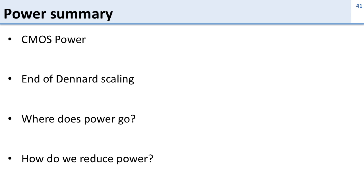Let's summarize what we talked about regarding power. We covered four issues here: where is CMOS power, what's the end of Denard scaling, where does the power go, and how do we reduce power?